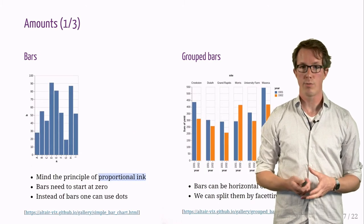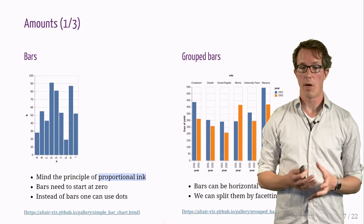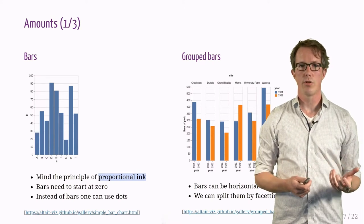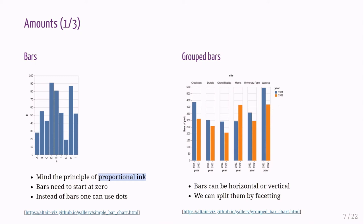After XY relationships, we turn to amounts. I will show a few examples. A bar plot on the left, and we remember the principle of proportional ink from another video. So the bars need to start at zero.